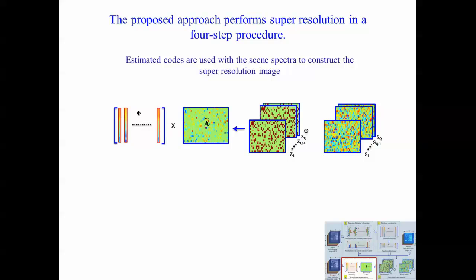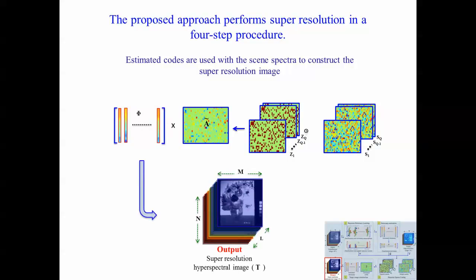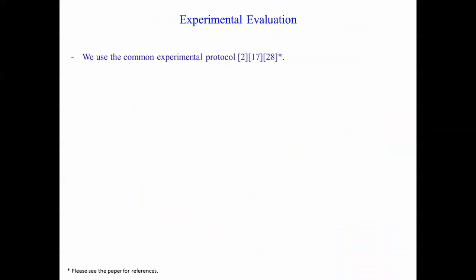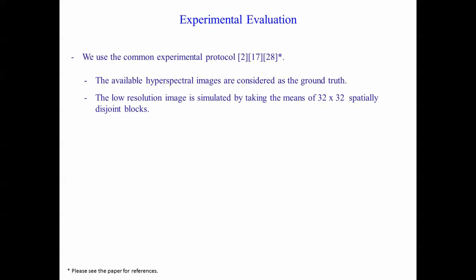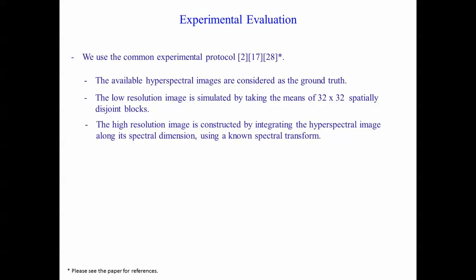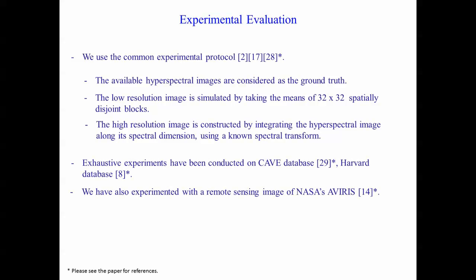The computed codes are used with the estimated dictionary to compute the super-resolution hyperspectral image. To evaluate our approach, we follow the commonly used experimental protocol, in which available hyperspectral images are used as ground truth. The low spatial resolution image is constructed by taking the mean of 32 by 32 spatially disjoint blocks of the ground truth, and the high-resolution image is constructed by integrating the ground truth along its spectral dimension using a known spectral transform. We conducted exhaustive experiments with two public hyperspectral databases and a remotely sensed image acquired by a sensor of NASA.